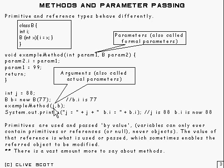And down here, these things are called arguments, or sometimes they're also called actual parameters. And then we print out the result. And not surprisingly, j is 88, and B.i is also 88.